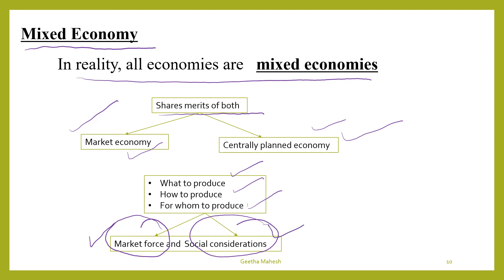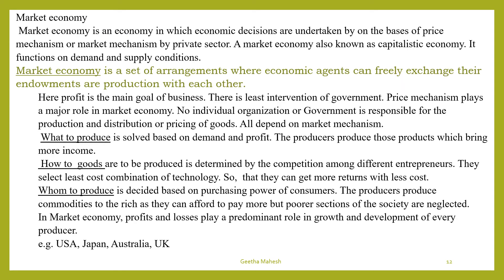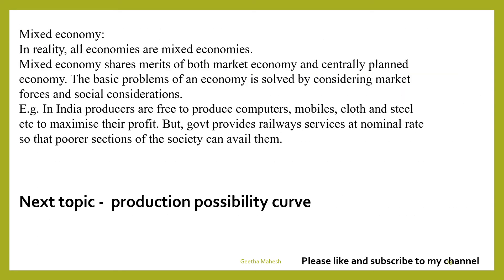For example, in India producers are free to produce mobiles, laptops, computers, cloth, and steel in order to maximize their profit. But railways in India are owned by government — the government provides transport services at nominal rates so that the poorer section of the society can avail them. Notes on centrally planned economy, market economy, and mixed economy have been prepared and dear students you can make use of these notes too.